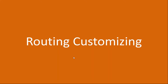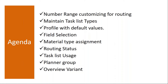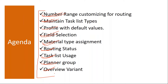The topics we are going to cover: number range customizing for routing, maintaining the task list types for routings, creation of task list profile with default values, field selection, material type assignment, routing status and how it is configured, task list usage and how it is used, planner group, and overview variant. These are the ones we will cover in the routing configuration.